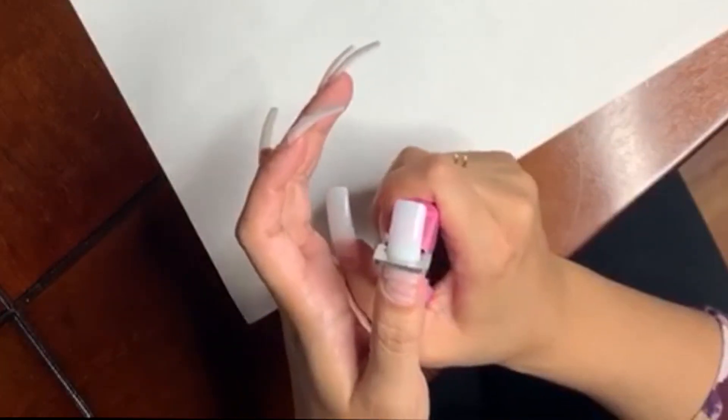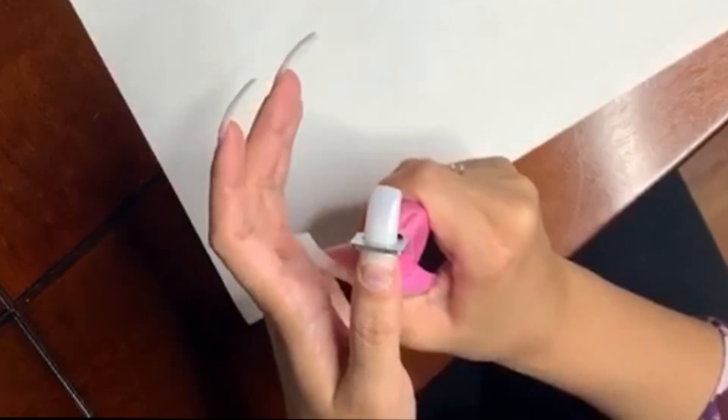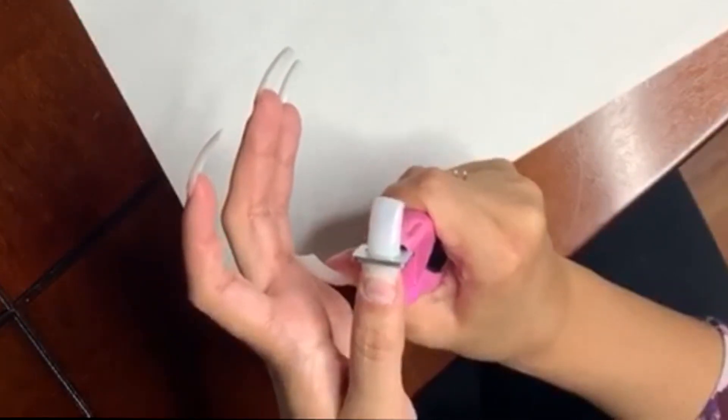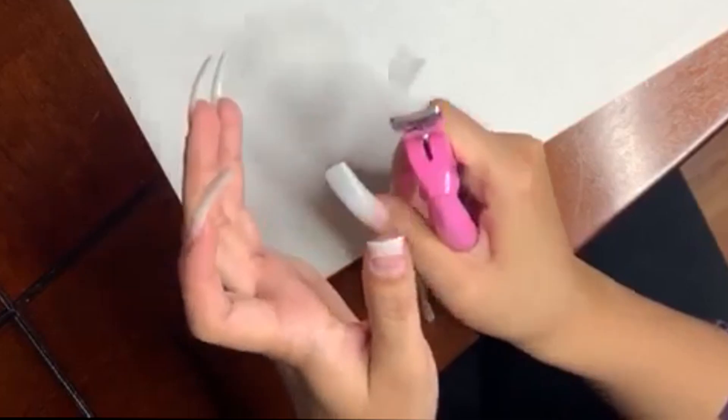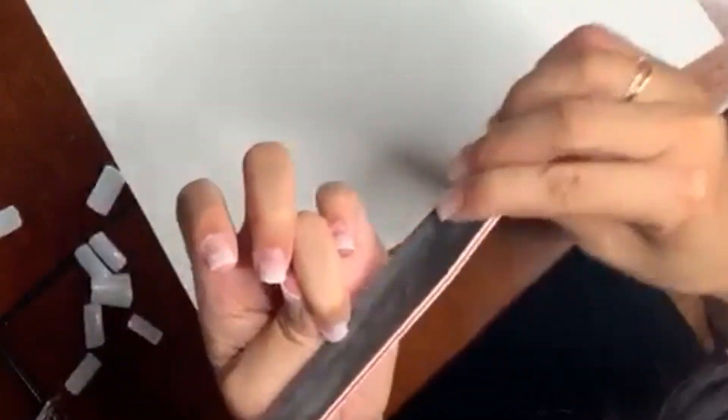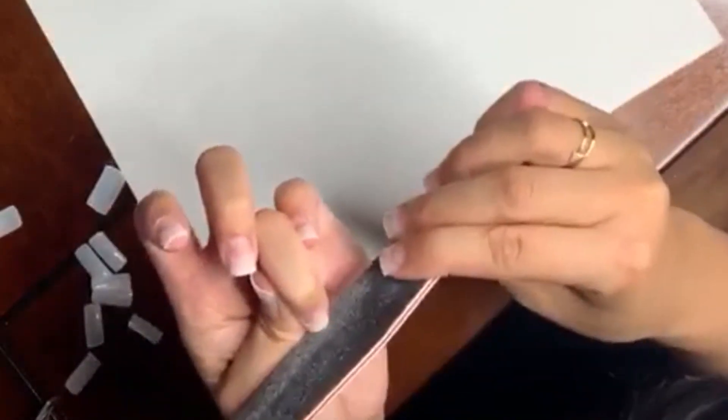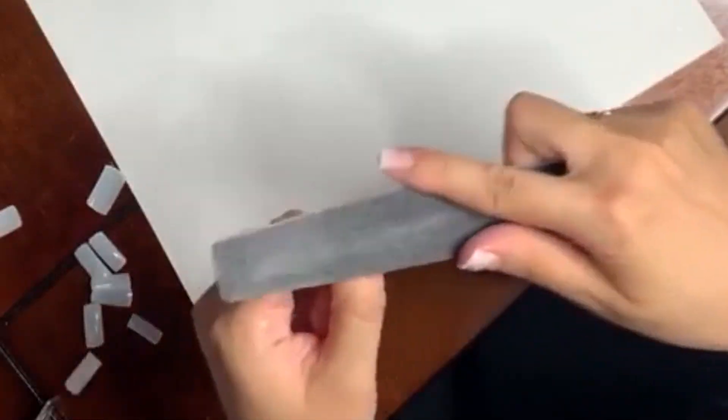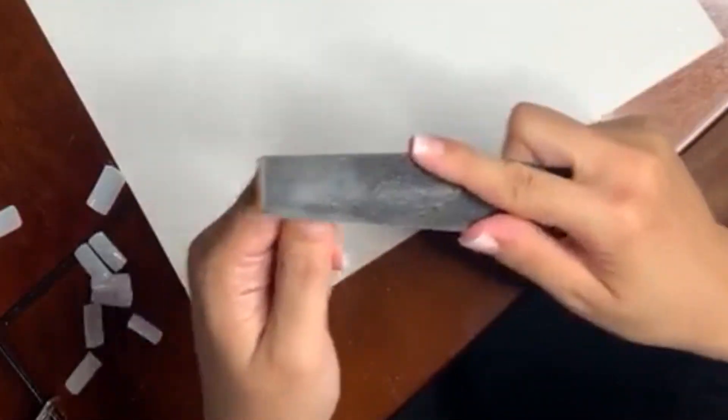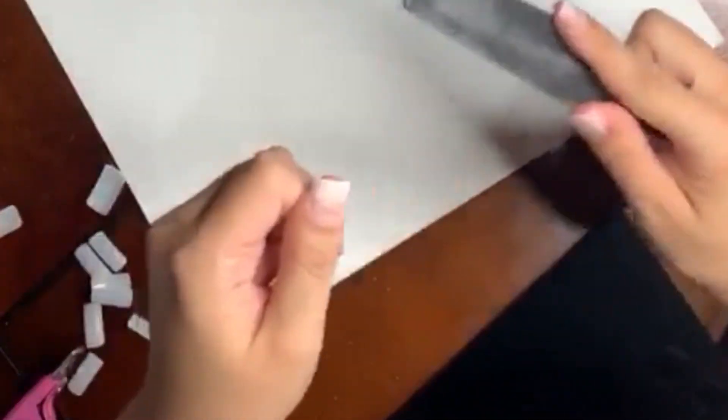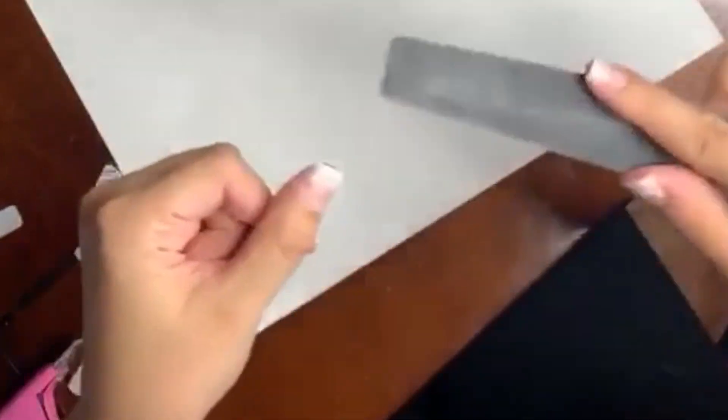Take a nail cutter and trim my tips. After applying the tips, I'm going to file the tip. I'm going to make sure I get all the shine off the tip and also I want to get the tip and my natural nail bed as even as possible.